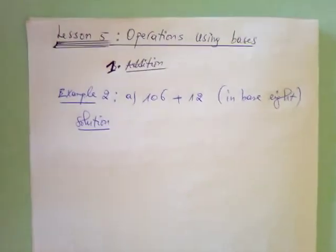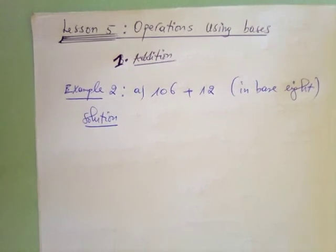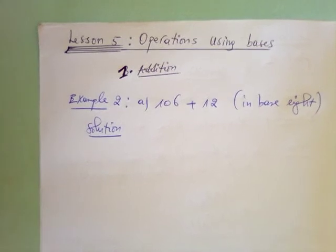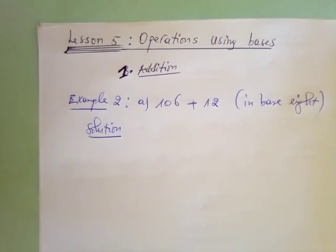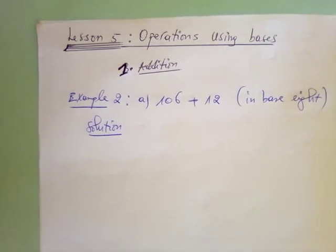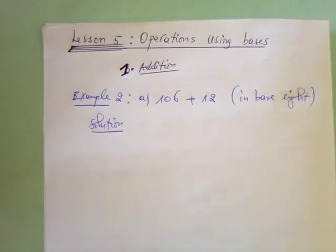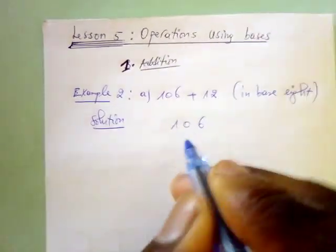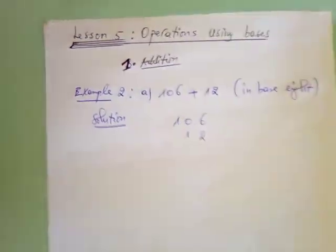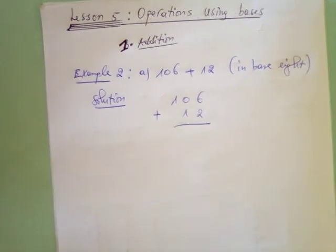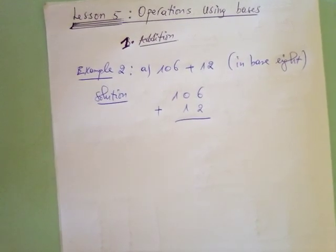The first thing to do is to add these numbers vertically. We have to order them so that place values correspond — that means you have 106 here and 12 below it. We are adding them and we are working within base eight.